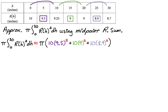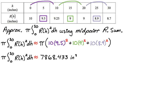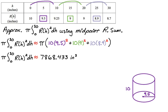Using a calculator, pi times the integral from zero to 30 of r of h squared dh is approximately 7,868.433. The units: r of h squared gives inches squared, multiplied by dh in inches, gives inches cubed — so this is a volume calculation. We're essentially adding up cylinders: one with height 10 and radius 9.5, another with height 10 and radius 9, and so on. The volume of a cylinder is pi R squared H, which is exactly where this integral comes from.